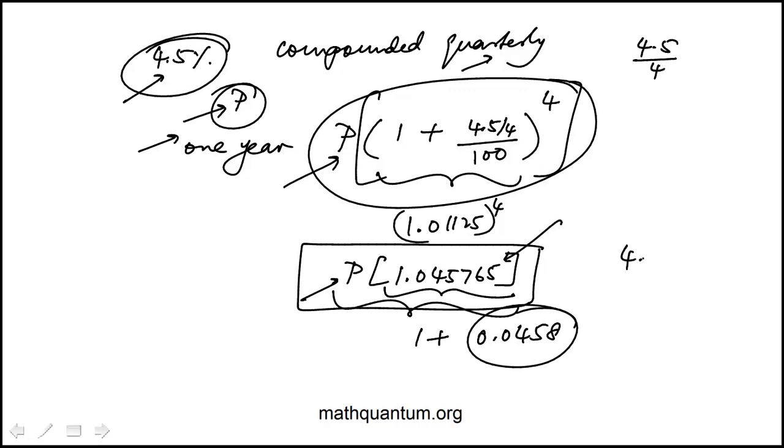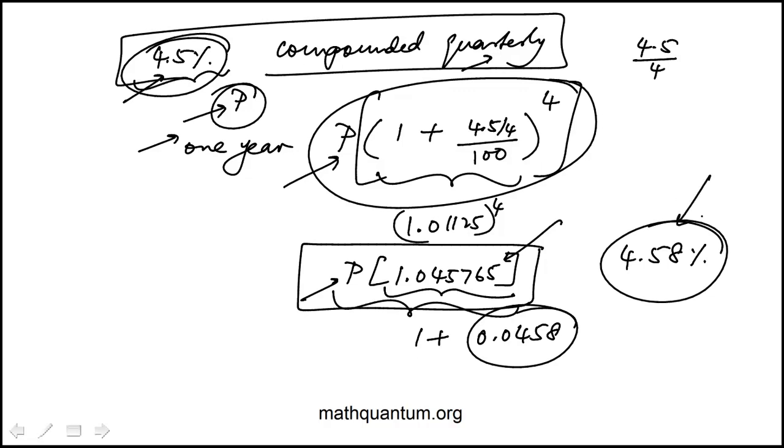So that interest, which is compounded quarterly, is equivalent to a single 4.58%, which is what the annual percentage rate for the loan is. So the answer is 4.58 choice D.